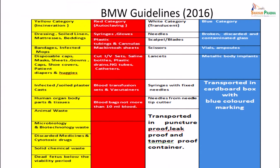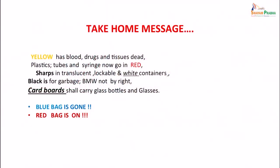Different lines have been set. Yellow category needs to be incinerated. Red category needs to be autoclaved. White category — translucent container — waste is transported in puncture-proof, leak-proof containers. Blue category is the cardboard box with blue-coloured lining for discarded glass. It is important to follow these rules under the four categories designated as per the 2016 guidelines. The take-home message: yellow has blood, drugs and tissues; plastics, tubes and syringes now go in red; sharps in translucent, lockable white containers; black is for general garbage and BMW does not go in it by right; cardboard box shall carry glass bottles and glasses. So it is mainly yellow, red, black and white.